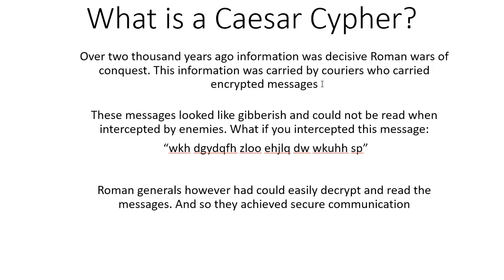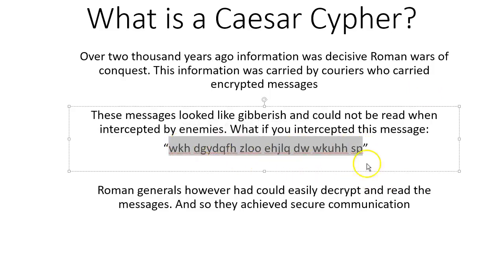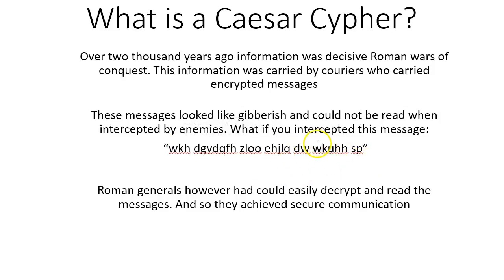But when they got intercepted and the enemies got to read them, the messages were just gibberish. This is because Romans used an encryption technique which is named after Julius Caesar. I'm not quite sure if Caesar himself invented it, but it is called the Caesar cipher. Here is an example of what a message that has actually very important meaning would have looked like. Total gibberish.